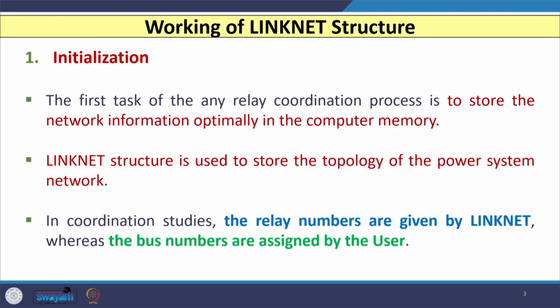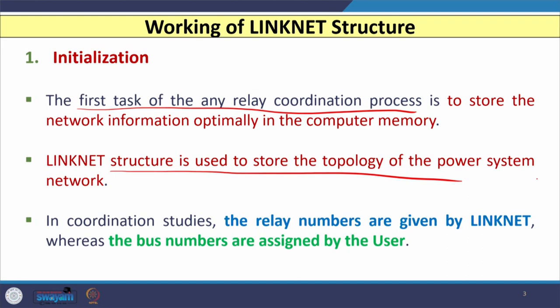With this background, let us see how the link net structure works. The first task of any relay coordination process is to store the network information optimally in computer memory. Link net structure is used to store the topology of a particular distribution network so that we can process it, calculate primary and backup relay pairs, and use those pairs for plug setting and time dial setting calculations. Relay numbers are given by the link net structure, whereas bus numbers are assigned by the user.